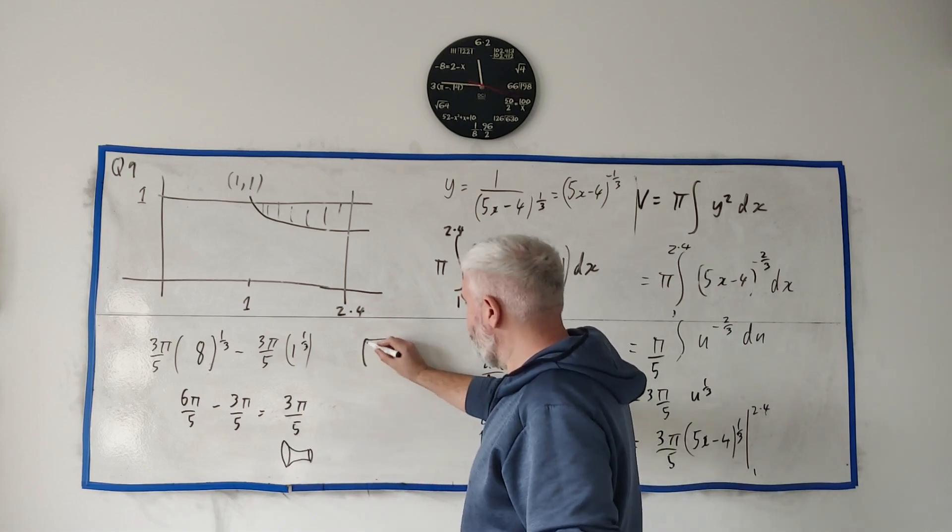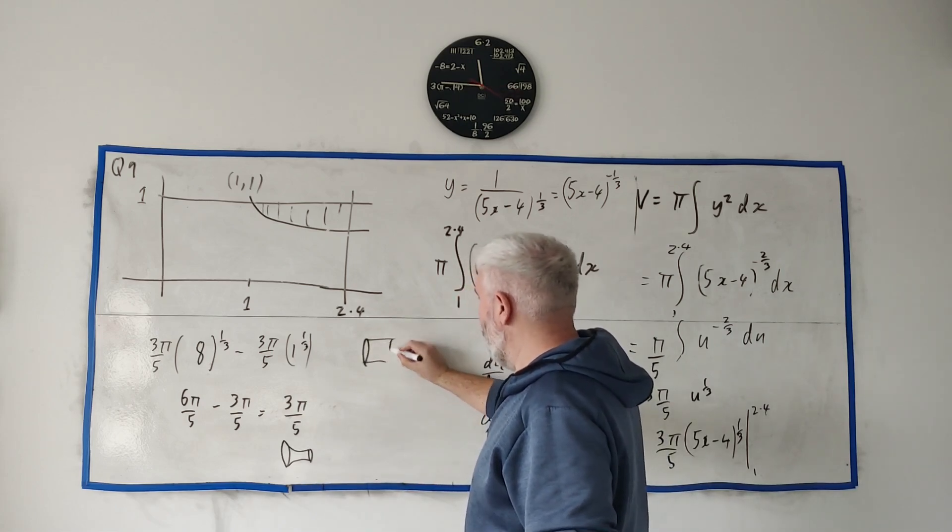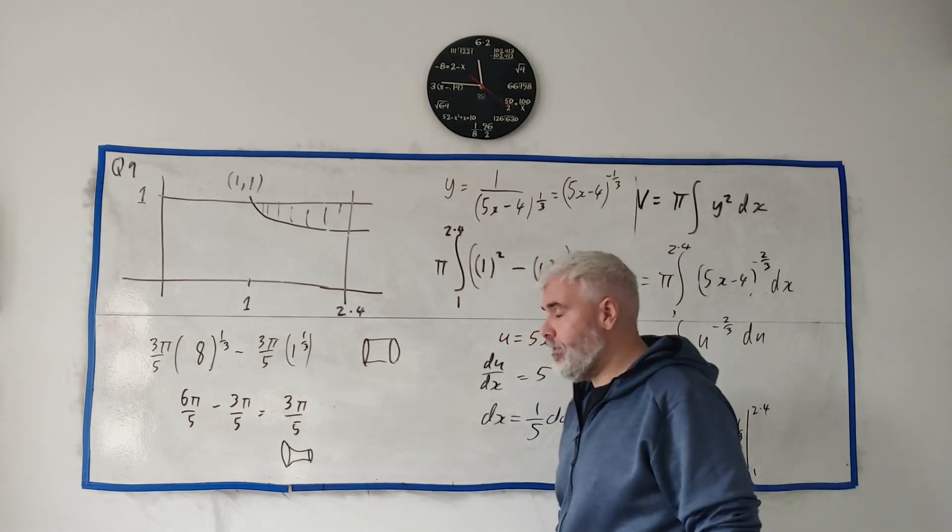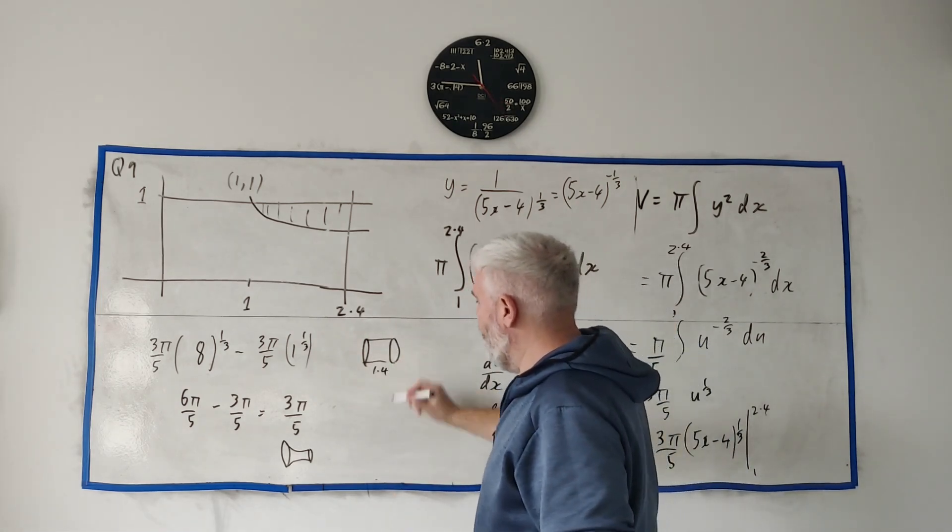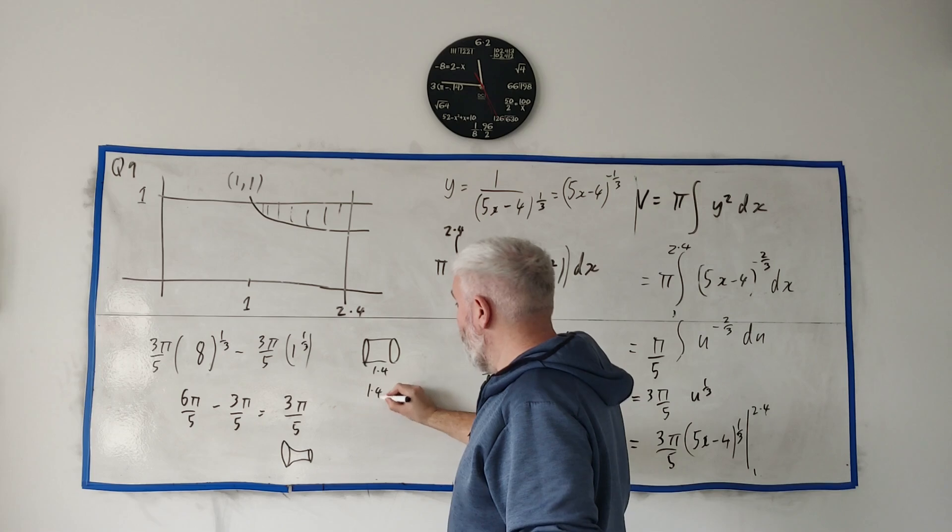So let me say that again - this number is this shape. The cylinder itself with the 1 radius and the 1.4 here, that was 1.4 pi.